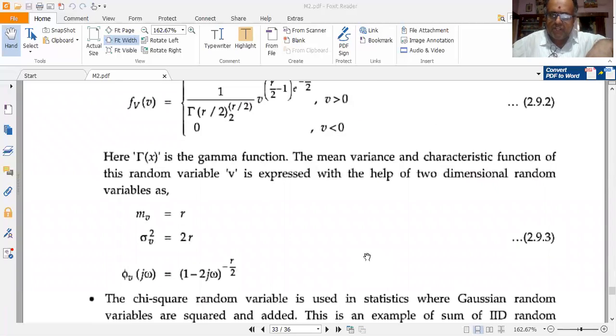The mean, variance, and characteristic function of this random variable V is expressed by a very lengthy derivation. The final answer: m_v or mu_v equals r. Variance sigma_v squared is given by 2r, so standard deviation sigma_v equals square root of 2r. The characteristic function φ_v(jω) is given by (1 - 2jω) to the power of minus r/2.